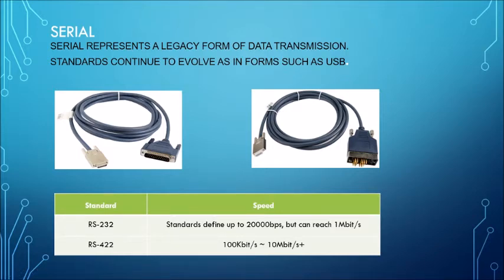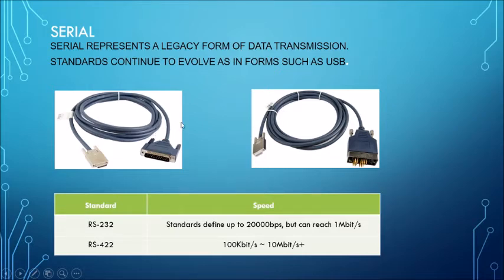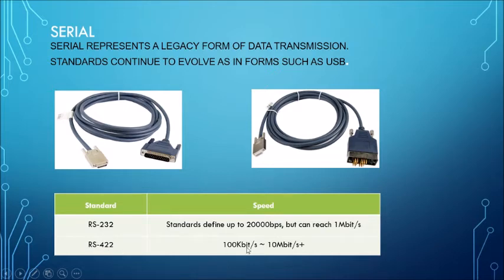Now, what is serial cable? This is an older cable that was used in the past — in the 1980s — for communication purposes. Its standard is RS-232, with a data rate defined as up to 20,000 bps but capable of reaching about 1 megabit per second. RS-422 runs at 100 Kbps and can reach up to 10 Mbps, as shown on the right side. Basically, serial cables were used in past transmission requirements but are no longer widely used today.